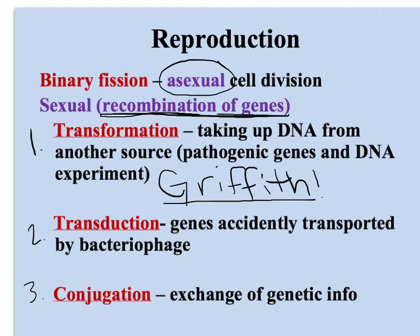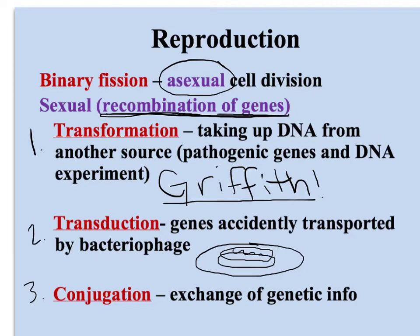Secondly, transduction. This is when genes are accidentally transported by a bacteriophage. So after a bacteriophage has put its DNA inside a bacteria cell, and it adds its DNA — so that's our little prophage — whenever environmental stress activates the viral DNA, it's going to pull itself out of the bacteria, and when it does that, it sometimes takes some of the bacteria's DNA with it to another bacteria cell. So accidental transport by a bacteriophage.